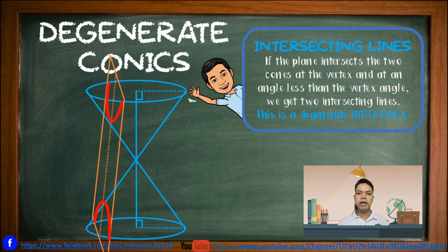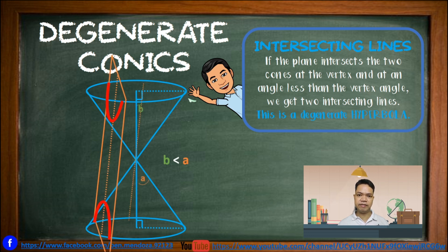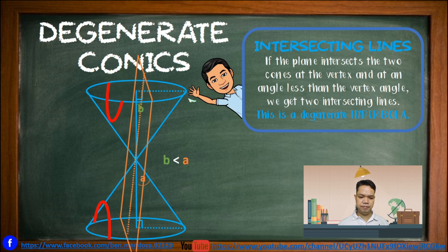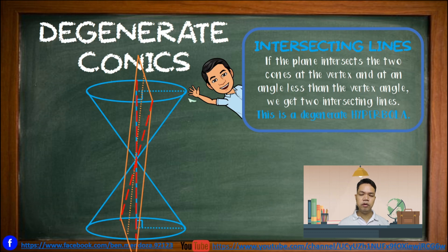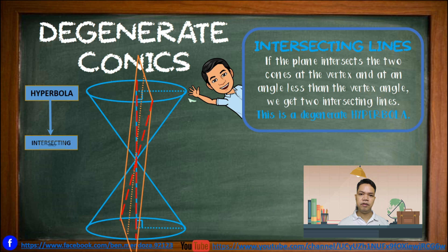If the plane intersects the cone at the vertex at an angle less than the vertex angle, we will get intersecting lines. As the plane moves toward the vertex of the double right circular cone, the hyperbola becomes two intersecting lines, or the hyperbola degenerates into intersecting lines.